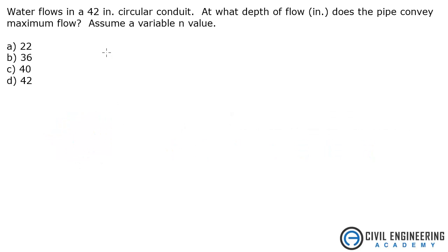Today we're solving a problem from Water Resources. The problem states water flows in a 42-inch circular conduit. At what depth of flow in inches does the pipe convey maximum flow? Assume a variable n value. So an n value, this is Manning's n, Manning's.